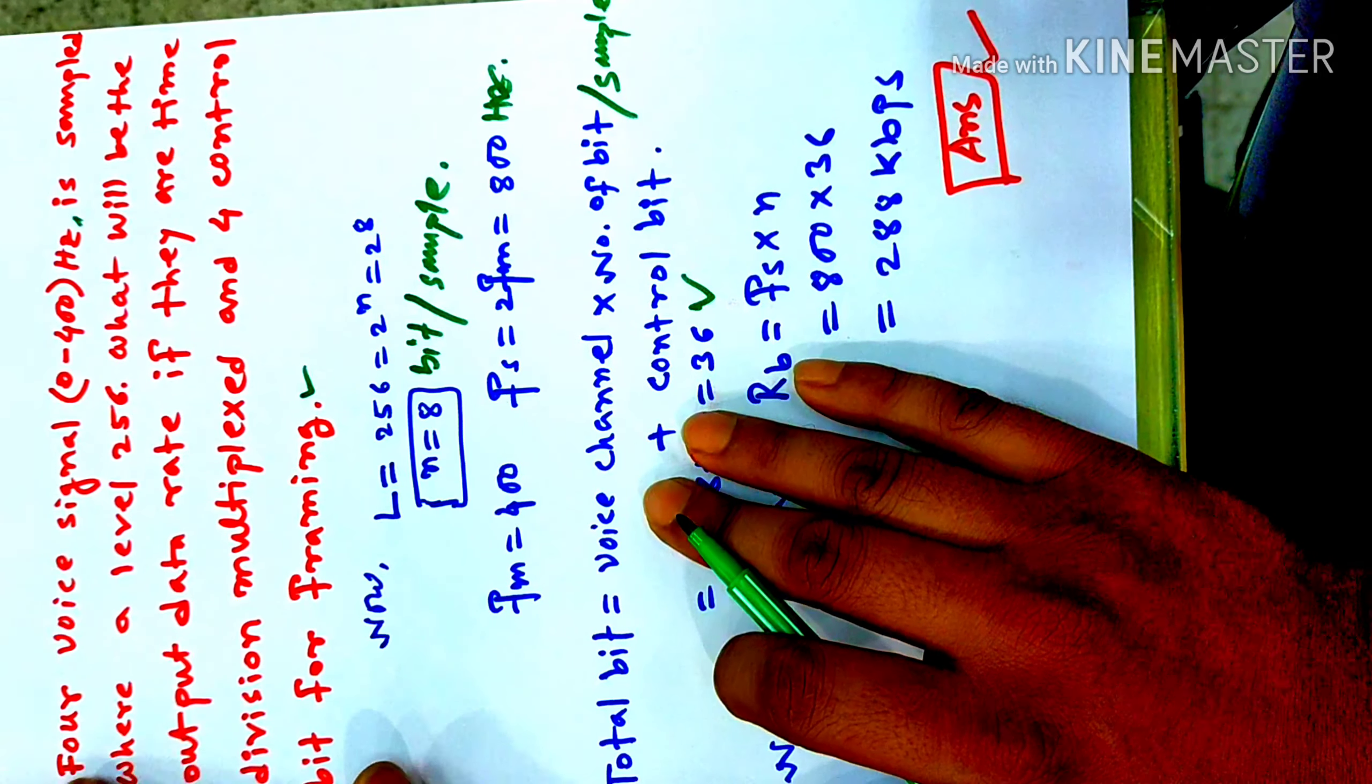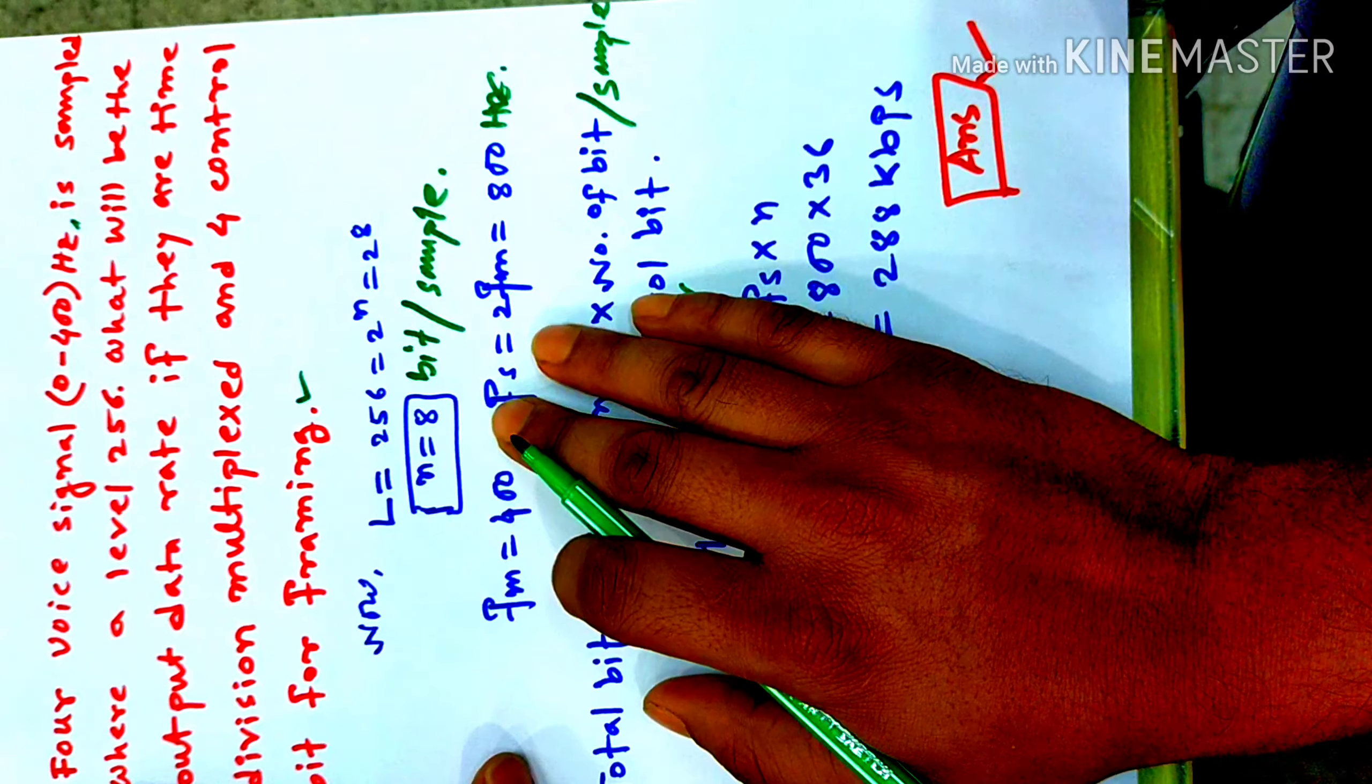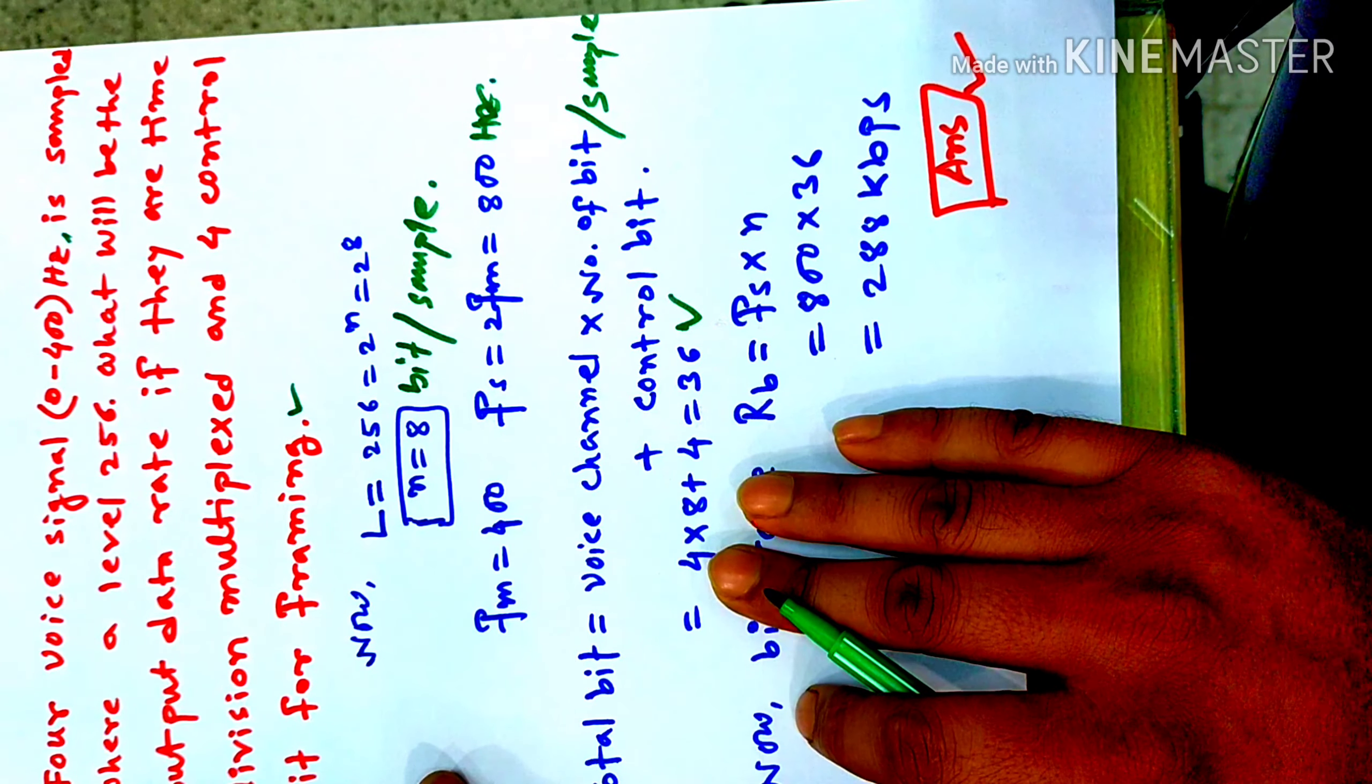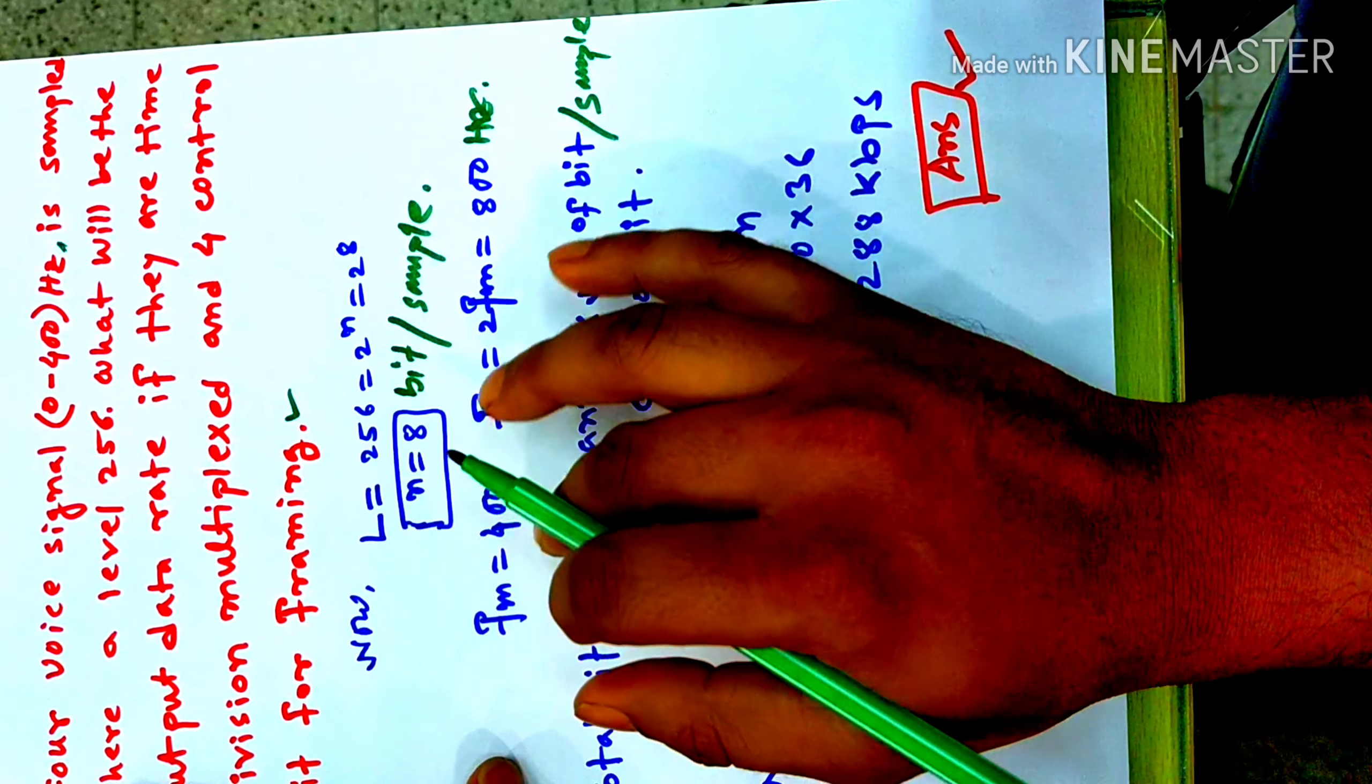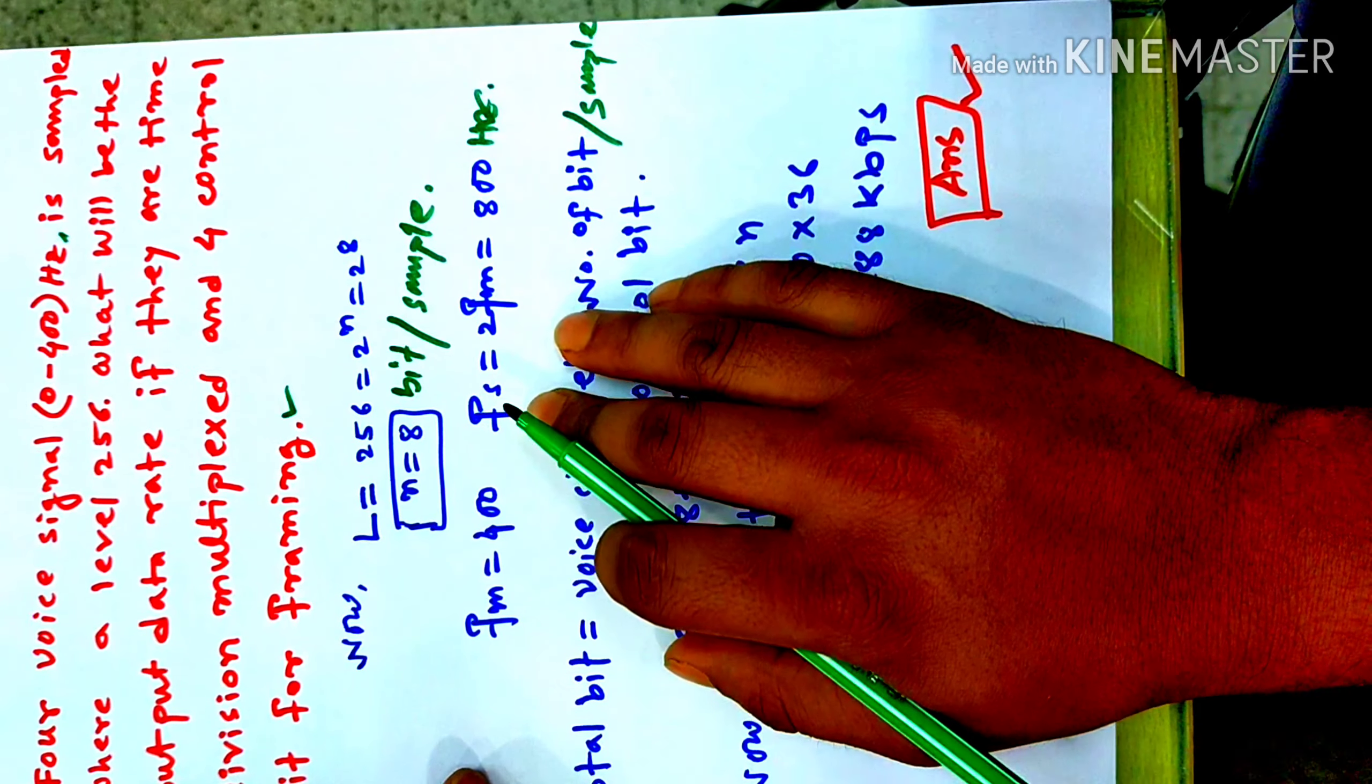Now, the first thing we need to do is the level. The level is the number of bits per sample. We need to log. Then, the signal range frequency. We can find the maximum range frequency. In this order, the maximum range frequency is 0 to 4000.